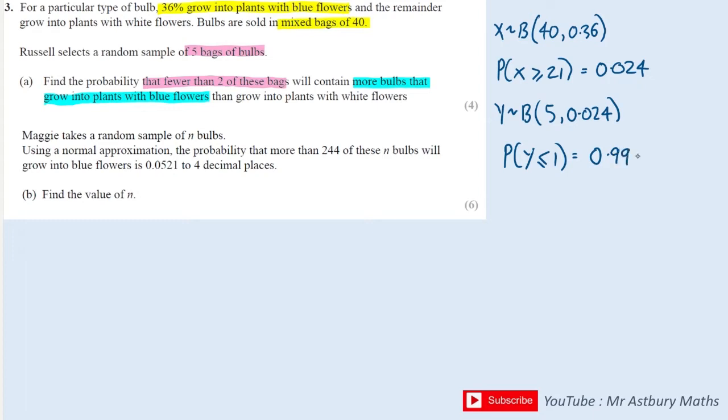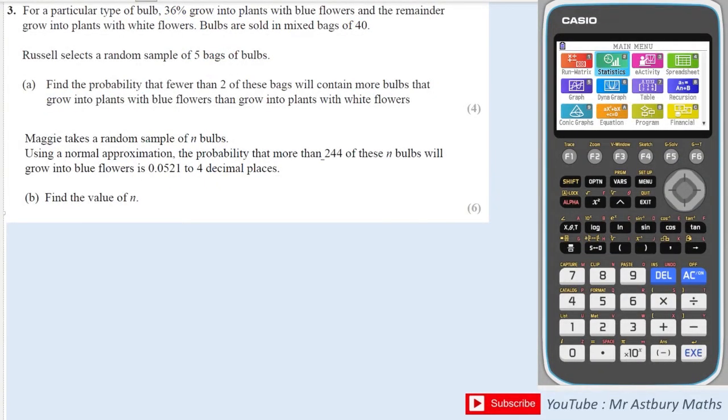Part B says that Maggie takes a random sample of n bulbs and using a normal approximation the probability that more than 244 of these bulbs will grow into blue flowers is 0.0521. For normal approximation we need to use a distribution which is found in your formula booklet of the mean NP and the variance NP(1 minus P).